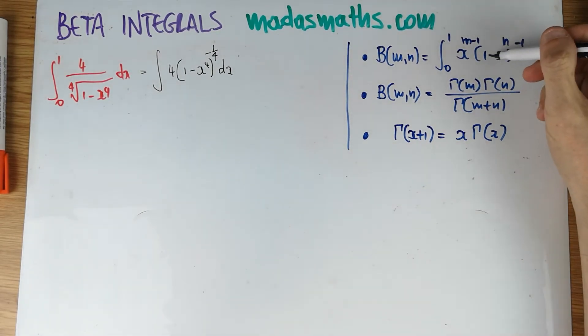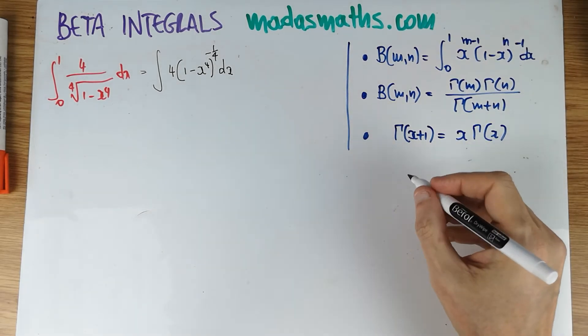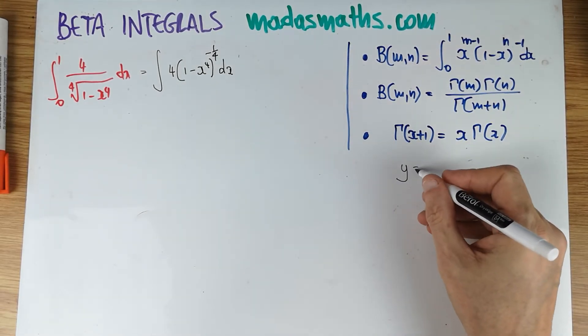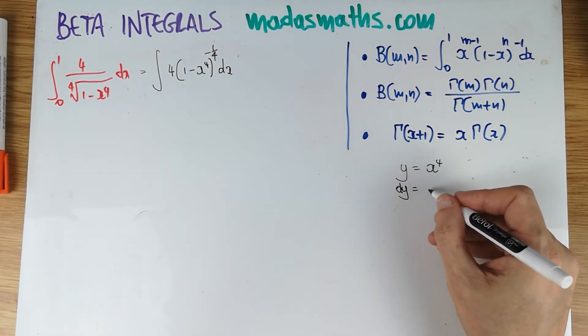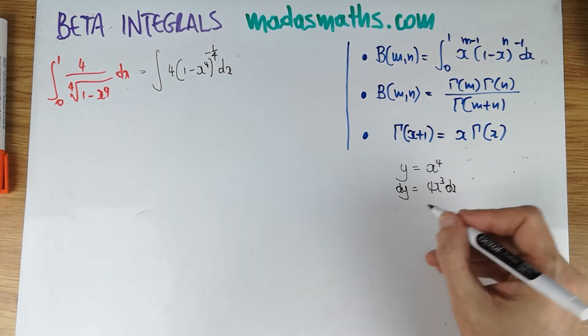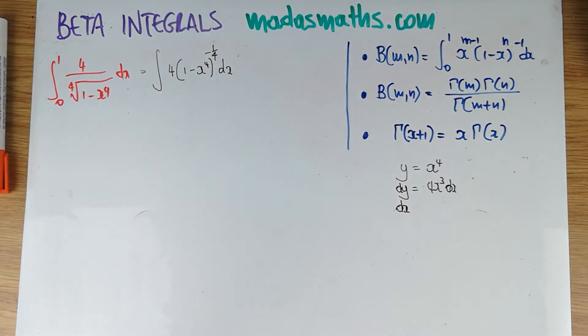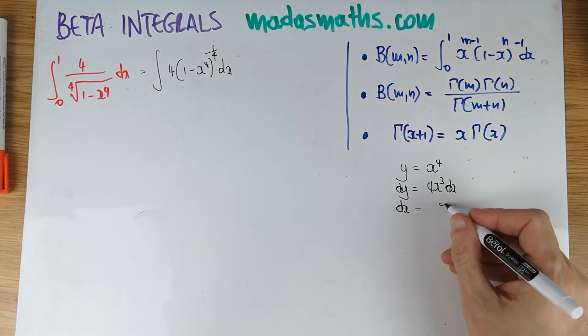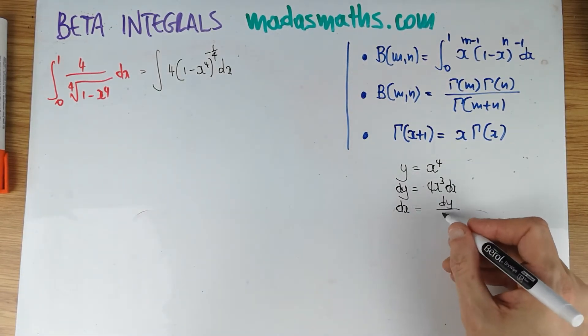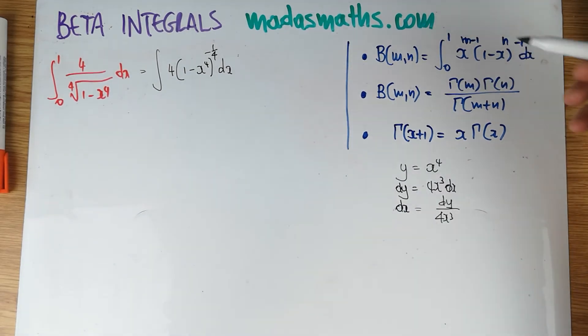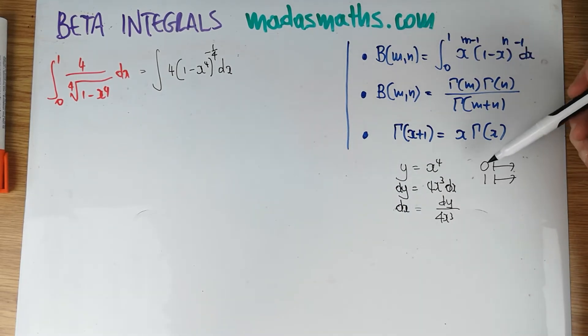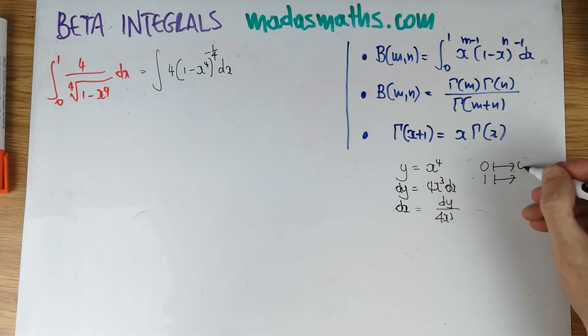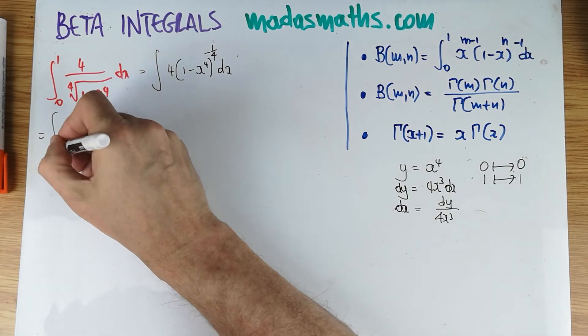First of all, looking at the beta function, I need the 1 minus x. So my substitution is going to be y is equal to x to the 4. And if we look at this, dy is 4x cubed dx, or dx is dy over 4x cubed. The limits, now, 0 and 1 in x. In x, if we look at the substitution, 0 there, 0 there. If it's 1 there, 1 to the 4 is still 1. So the limits are unchanged.